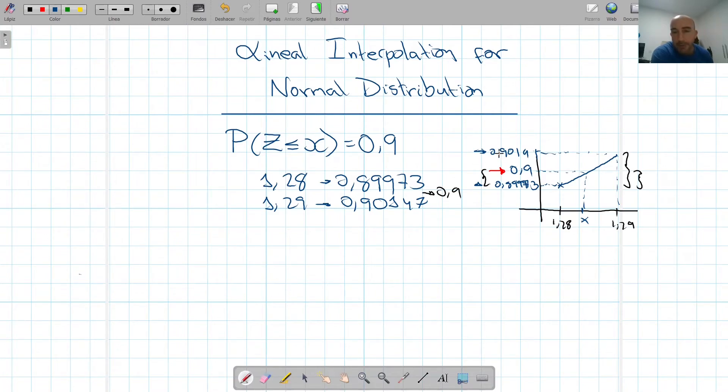So what are we going to do now? We're going to subtract the y's of the highest and the lowest points, so that's 0.90147 minus 0.89973, divided by, and those were the y's, and now I do 1.29, which was the y that corresponds to that, and 1.28.